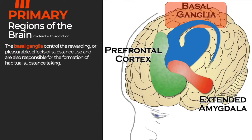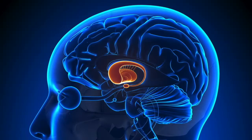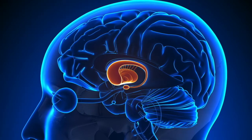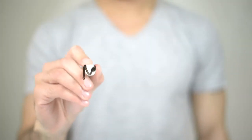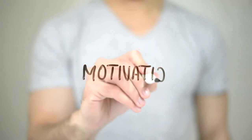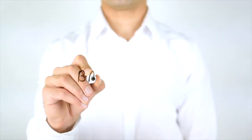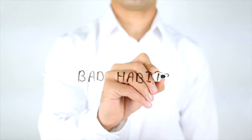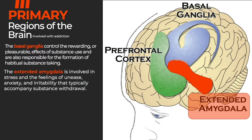The basal ganglia are a group of structures located deep within the brain that play an essential role in keeping body movements smooth and coordinated. They are also involved in learning routine behaviors and forming habits. Two sub-regions of the basal ganglia are particularly crucial in substance use disorders: the nucleus accumbens, which is involved in motivation and the experience of reward, and the dorsal striatum, which is involved in forming habits and other routine behaviors. The extended amygdala and its sub-regions regulate the brain's reactions to stress, including behavioral responses like fight or flight, and negative emotions like unease, anxiety, and irritability.